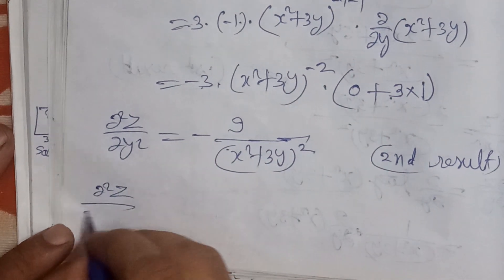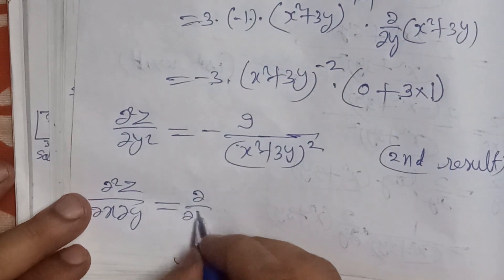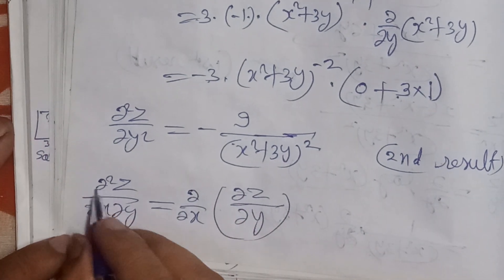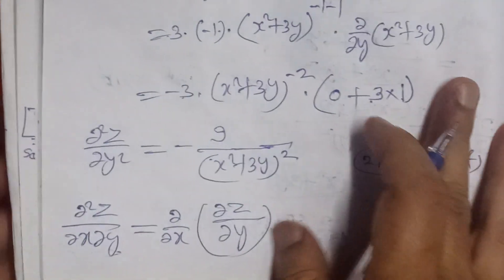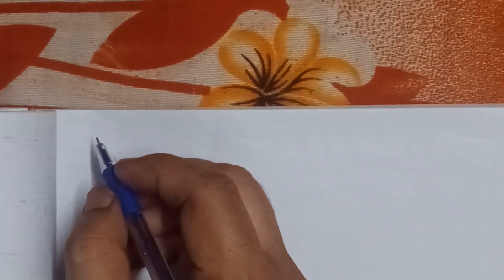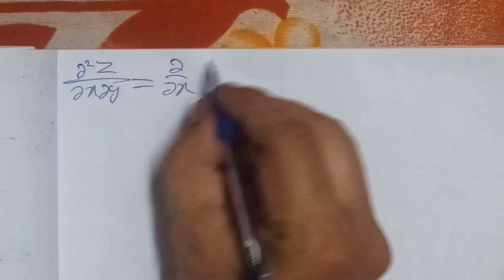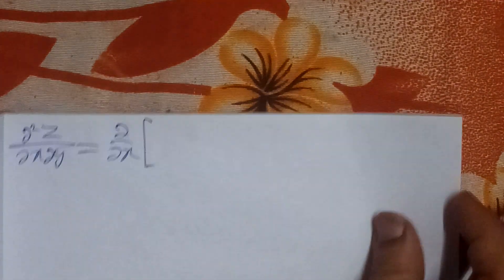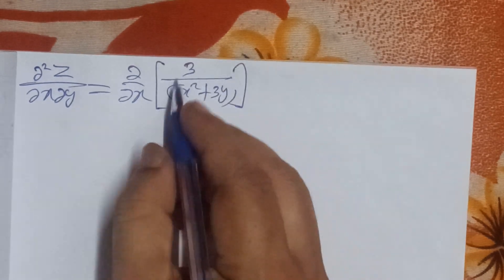Now we have to find the third result: del²z/del x del y. We obtain this by differentiating del z/del y with respect to x. We apply del/del x to the value of del z/del y, which we found to be 3/(x² + 3y). Here 3 is a constant, so we take it out and differentiate 1/(x² + 3y) with respect to x.